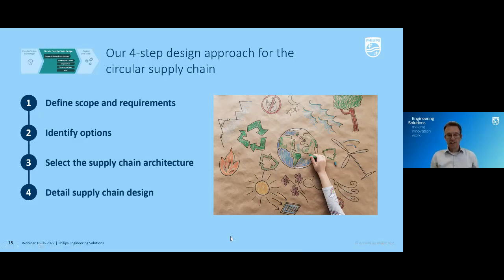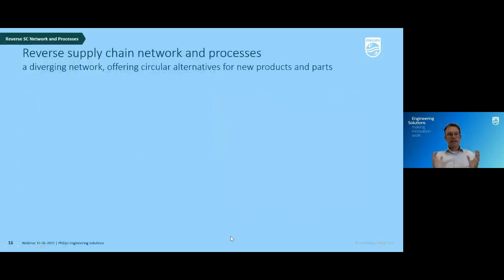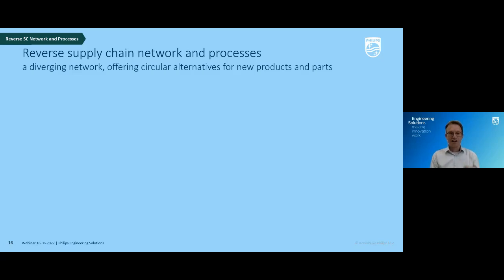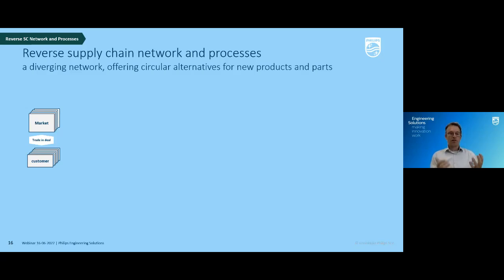Let's look into the network and processes. It's important to understand that the nature and setup of your reverse supply chain looks completely different from what we're used to in a linear supply chain, because your goods movements start from the customer. As the first step, we have customers and global markets. If you have a global delivery model, it's a global process. The markets and customers align on trade-in deals, very much dependent on the lifecycle status of your product — when you take back and how.